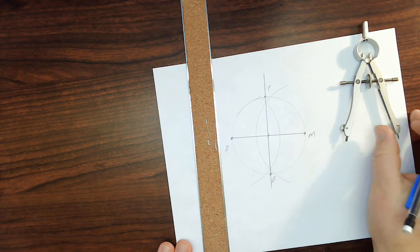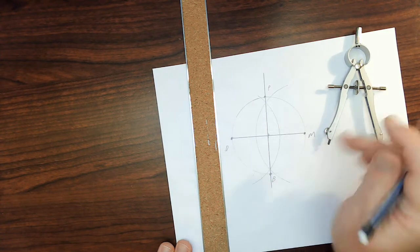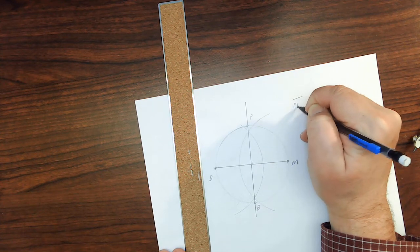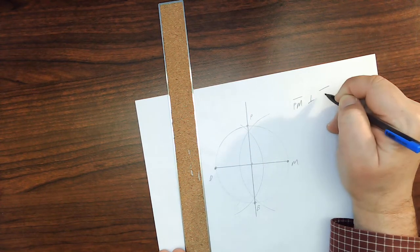And that's it. I've now constructed a circle, a diameter, and a perpendicular bisector. I could say that the line segment PM is perpendicular to the line segment DM.